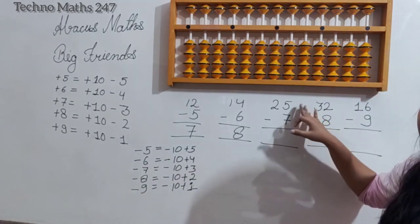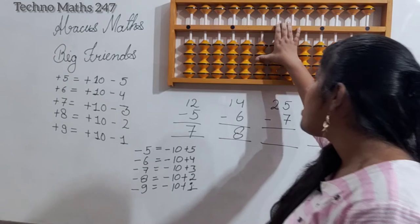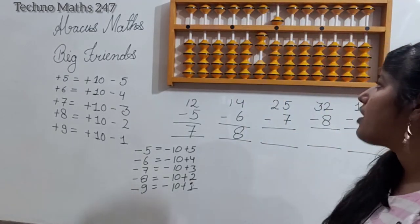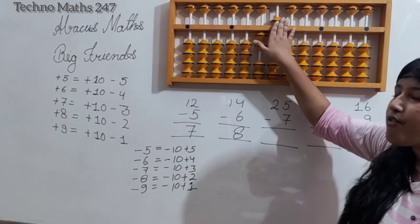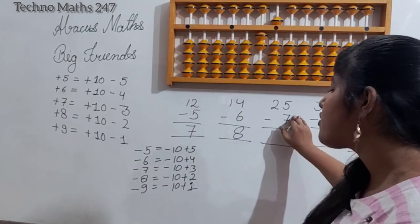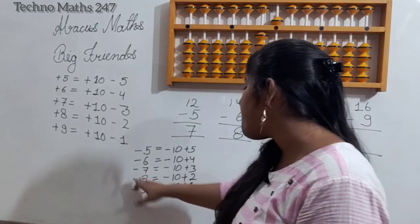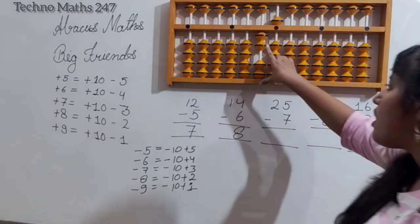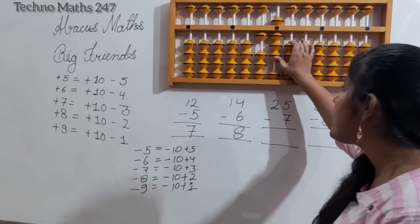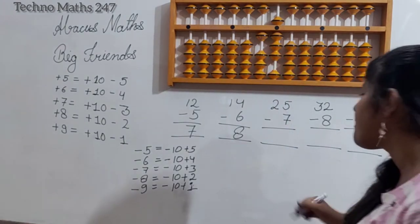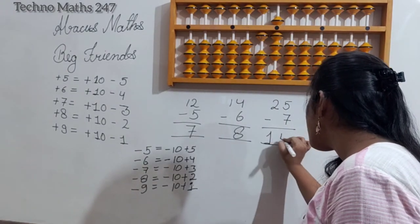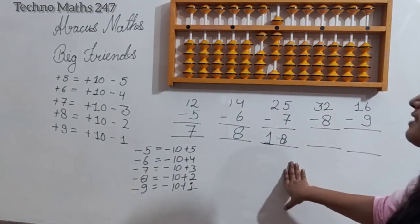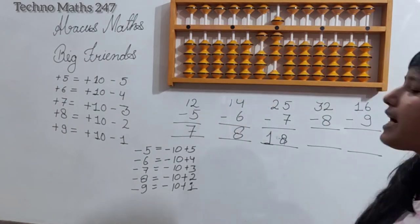Next question: 25 minus 7. We place 2 on the 10's rod and 5 on the 1's rod, giving us 25. For minus 7, the big friend is minus 10 plus 3. We apply minus 10 plus 3, and the answer is 18, which is 10 plus 8.